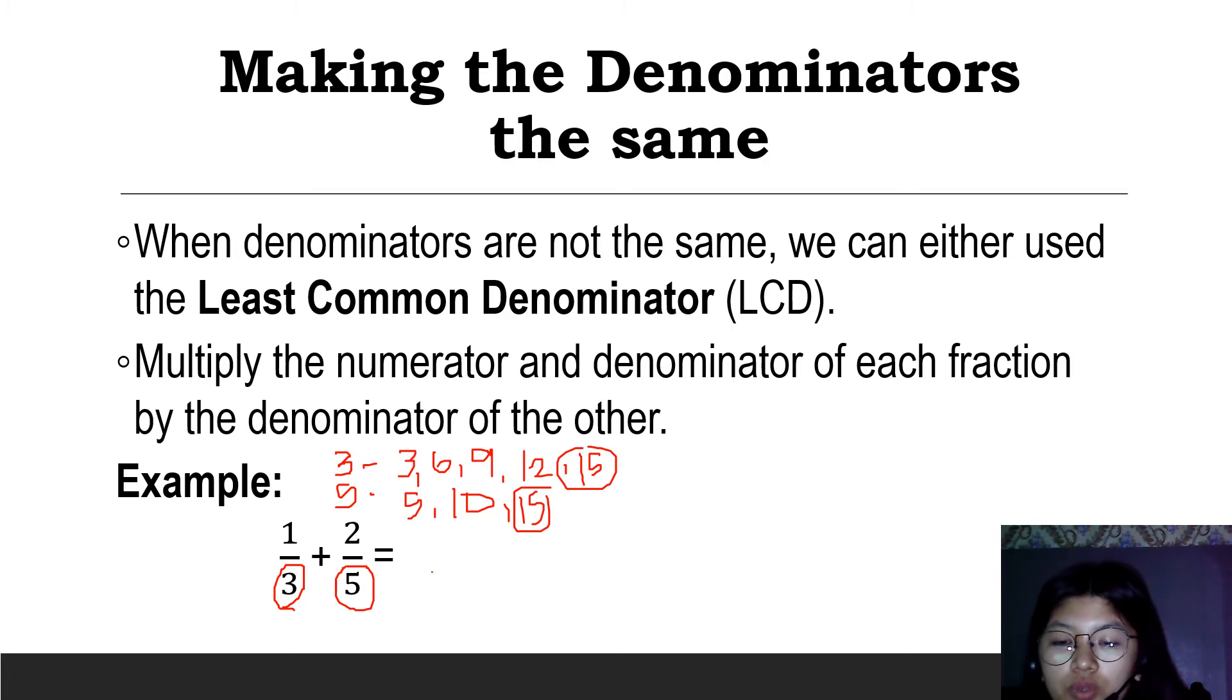After getting the LCD, it becomes the denominator. Then divide by our denominator and multiply by the numerator. 15 divided by 3 is 5 times 1 is 5. The operation is addition. 15 divided by 5 is 3 times 2 is 6. So 5 plus 6 is 11, with denominator 15. That's why 1 third plus 2 fifth equals 11 over 15.